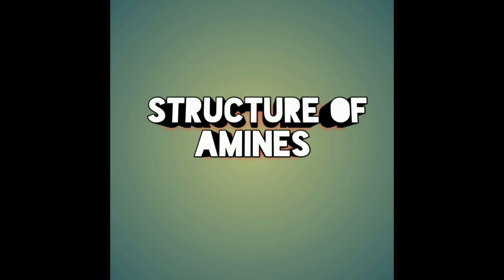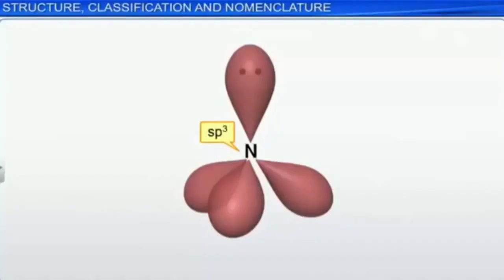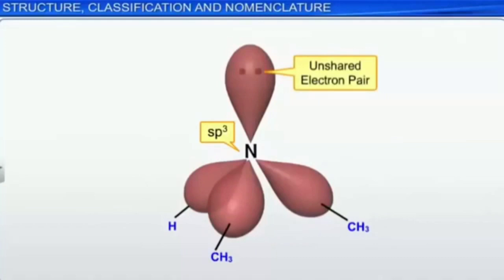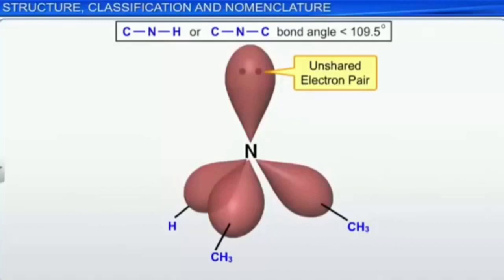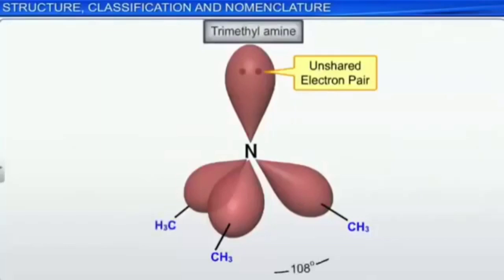Next, the structure of amines. The hybridization of nitrogen in amines is in the sp3 state with a pyramidal shape. The nitrogen atom contains one lone pair of electrons. Since lone pair–bond pair repulsion is greater than bond pair–bond pair repulsion, the bond angle of amines is less than the normal tetrahedral angle of 109.5 degrees. For example, the bond angle of trimethylamine is 108 degrees.